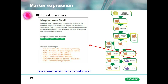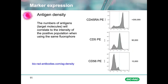You've picked the marker that will identify your cells. But what is that marker or antigen's density, and why does it matter? The number of antigen molecules that the cell carries will correlate directly to the intensity of a positive population. In the example given, we see three plots with different antigens all stained with PE, all giving different intensities as the number of receptors differs for each marker.